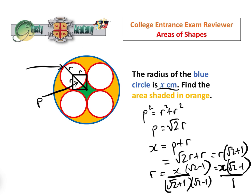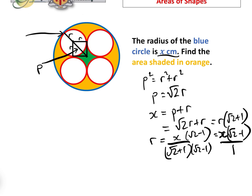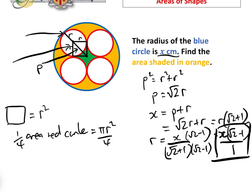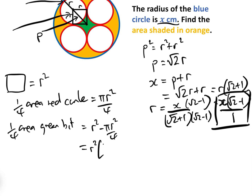Now we can find the area of the green bit. Looking at the square we've drawn, the area of the square equals a quarter of the area of the red circle plus the green bit. So the area of the green bit equals the area of the square minus a quarter of the area of the red circle. The area of the square is r squared, and a quarter of the area of the red circle is pi r squared over 4. So one green bit equals r squared minus pi r squared over 4, which equals r squared times (1 minus pi over 4).